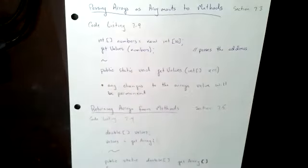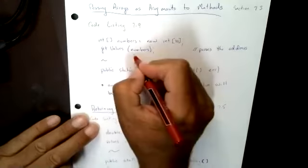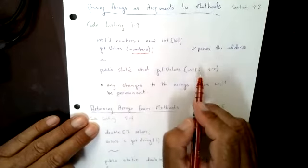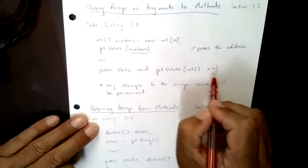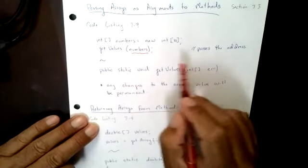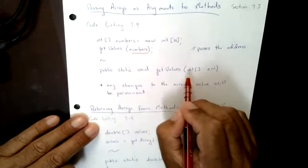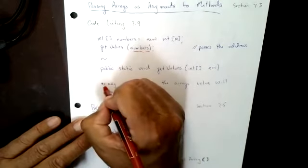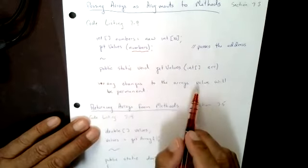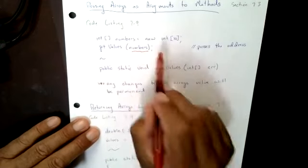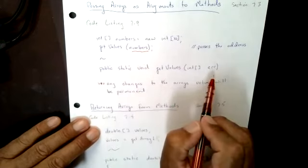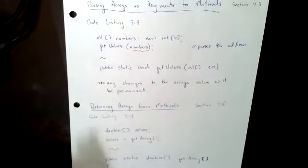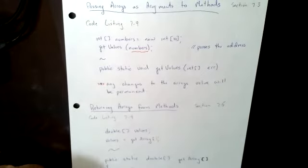My argument up here is 'numbers' — it's an address. It passes the address down and it lands in the parameter list where I'm saying: that address is the start of an integer array. Any changes to the array will in fact be permanent, because what I'm passing is just the address — I'm not changing the address at any point, I'm only changing what follows that address.